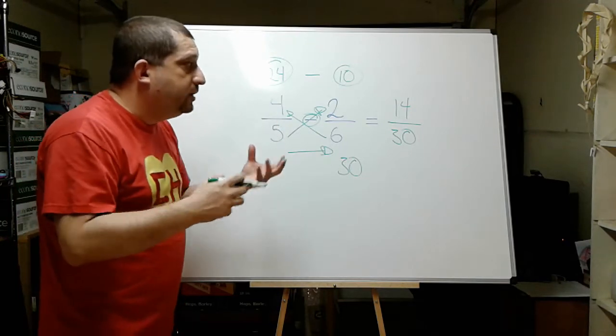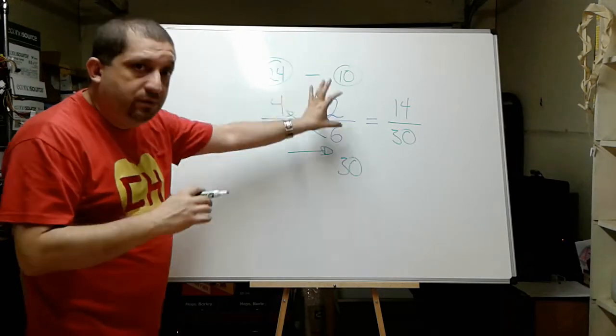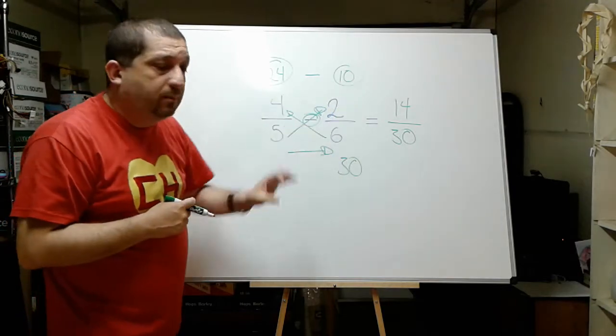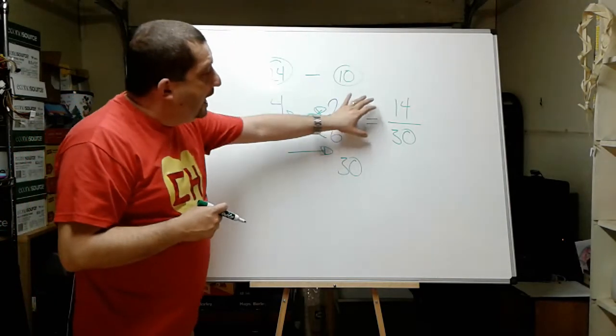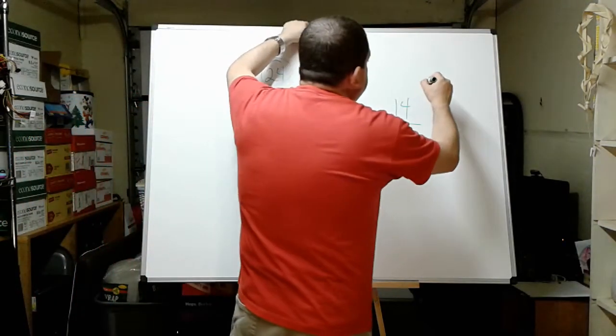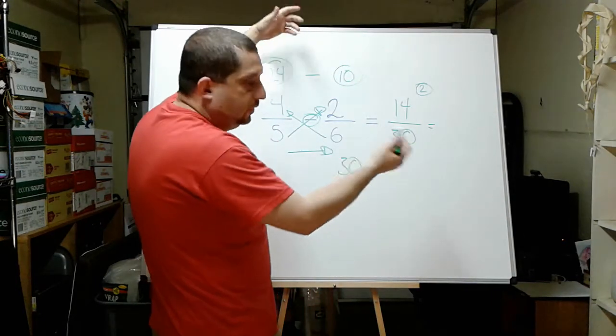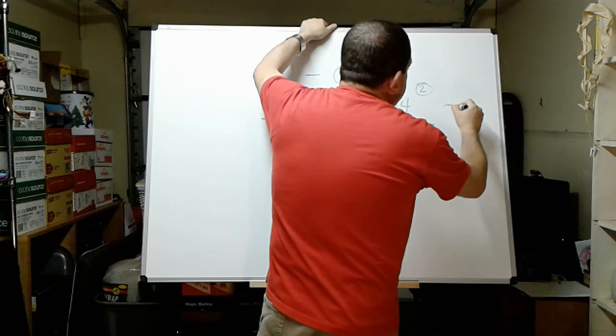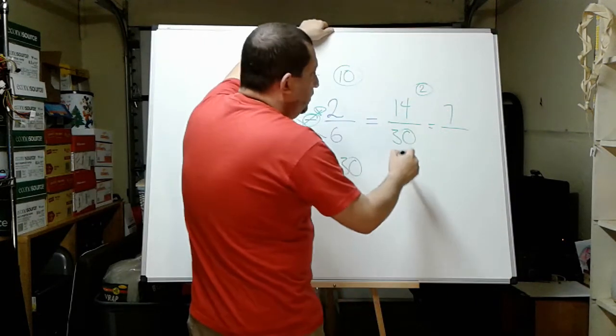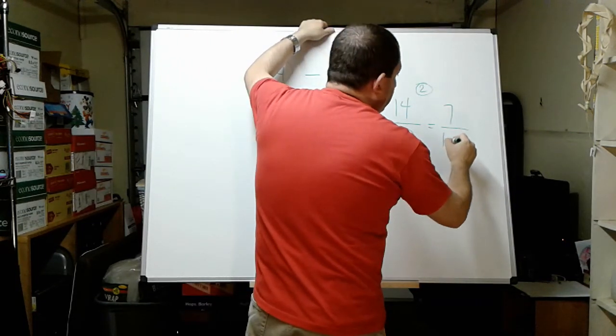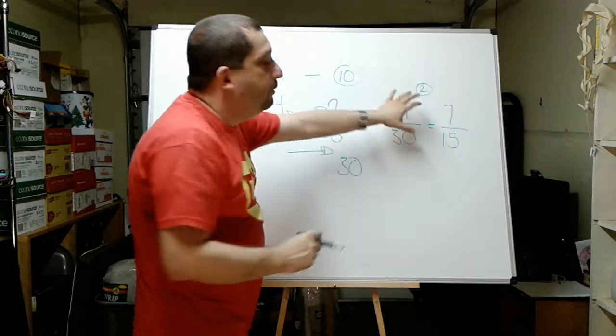However, I need to make sure and I need to see if I can reduce this number anymore. Can I reduce this number? Yes, I can. I can take the 2 and divide the 14 by the 2. And this is going to equal 7. And then the 30, this is going to equal 15. Can I reduce this anymore?